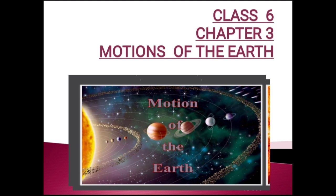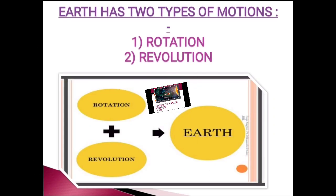In the previous chapters, you have studied that earth is a planet which moves around the sun. In order to understand this concept, we can take an example. All of you must have travelled by a train to visit different places. While looking outside from a moving train, you will observe that the things and features outside the train seem to be moving in the opposite direction. But in reality, the things and features outside the train are static — meaning they are stable or fixed — while the train is moving.